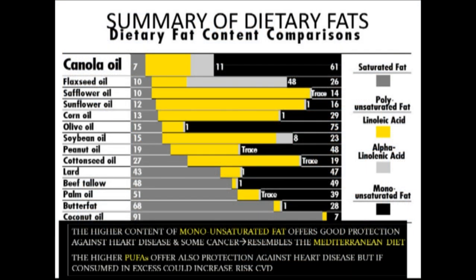I want to explore the summary of different dietary fats and their health benefits. In yellow, we're looking at the polyunsaturated omega-6 fatty acids, which come primarily from safflower, sunflower, corn oil, soybean oil, and cottonseed oil. On the far left in darker gray, starting with 7 for canola oil and 10 for flaxseed oil, are what we call the saturated fats — and we can see that saturated fats are exceedingly high in coconut and butterfat and palm oil, and moderately high in beef tallow and lard.